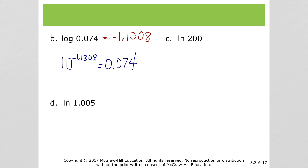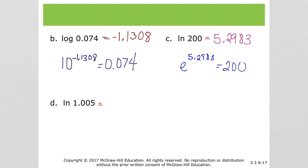For part c, natural log of 200 — put that in your calculator: 5.2983. To check that, natural log is log base e, so e to the 5.2983 should be 200. And last, natural log of 1.005 is 0.005. When we check that, e to the 0.005 should be 1.005.